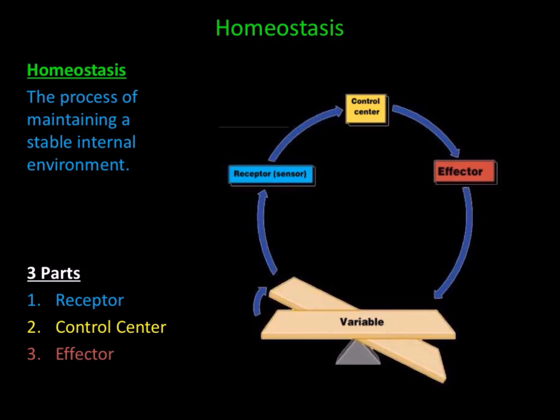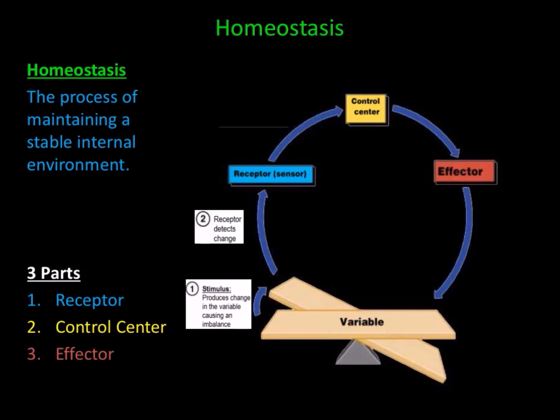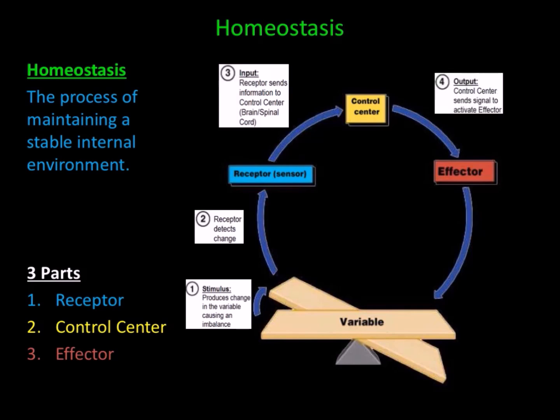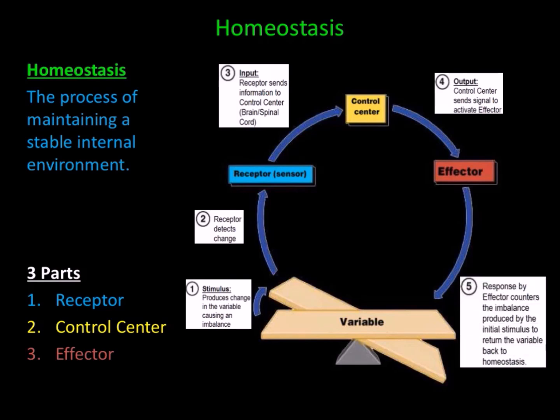Let's take a closer look at homeostasis in action. First, a stimulus produces a change in the variable causing an imbalance. Second, a receptor detects the change. Third, the receptor sends information to the control center. Fourth, the control center sends signals to activate an effector. And finally, the response by the effector counters the imbalance produced by the initial stimulus to return the variable back to homeostasis.